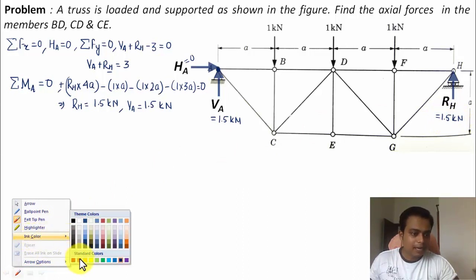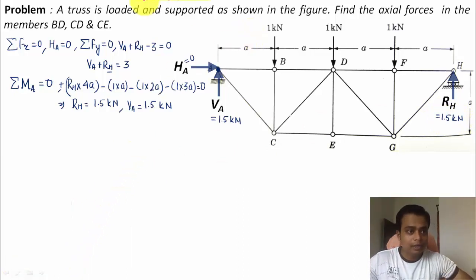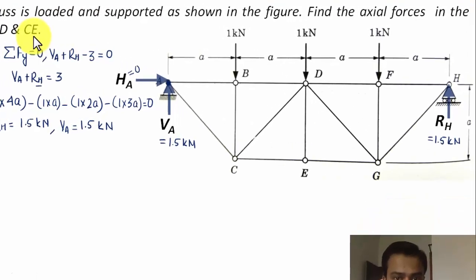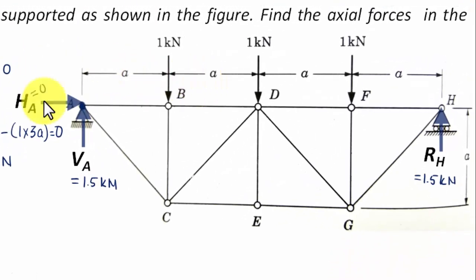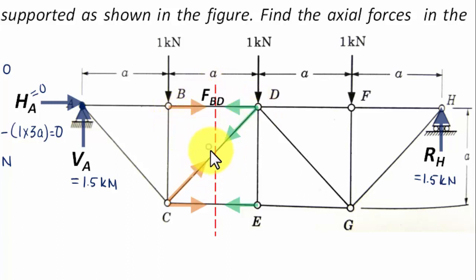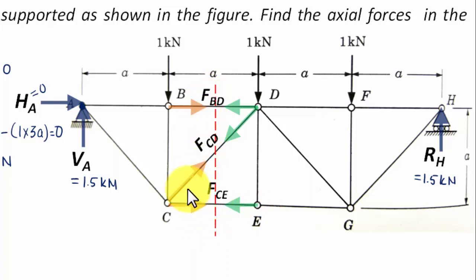In the next step we apply the method of sections to calculate the axial forces in members BD, CD, and CE. We pass a section through these three members. The axial forces approaching the section are: F_BD, F_CD, and F_CE. We have three unknown axial forces requiring three equations of equilibrium.